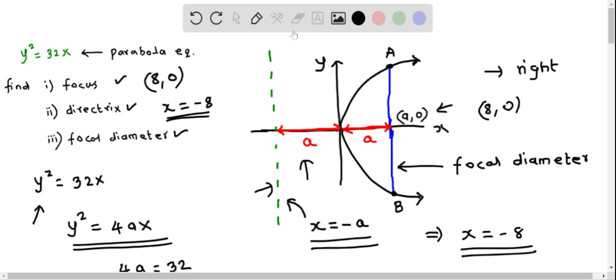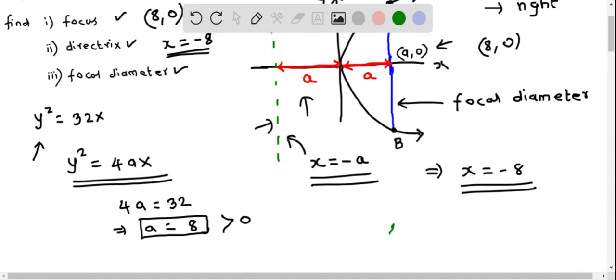Now let's determine the focal diameter. If you look at the figure, the focal diameter is basically the line segment which passes through the focus of the parabola and intersects at two points on the parabola. I noted the two points as A and B.